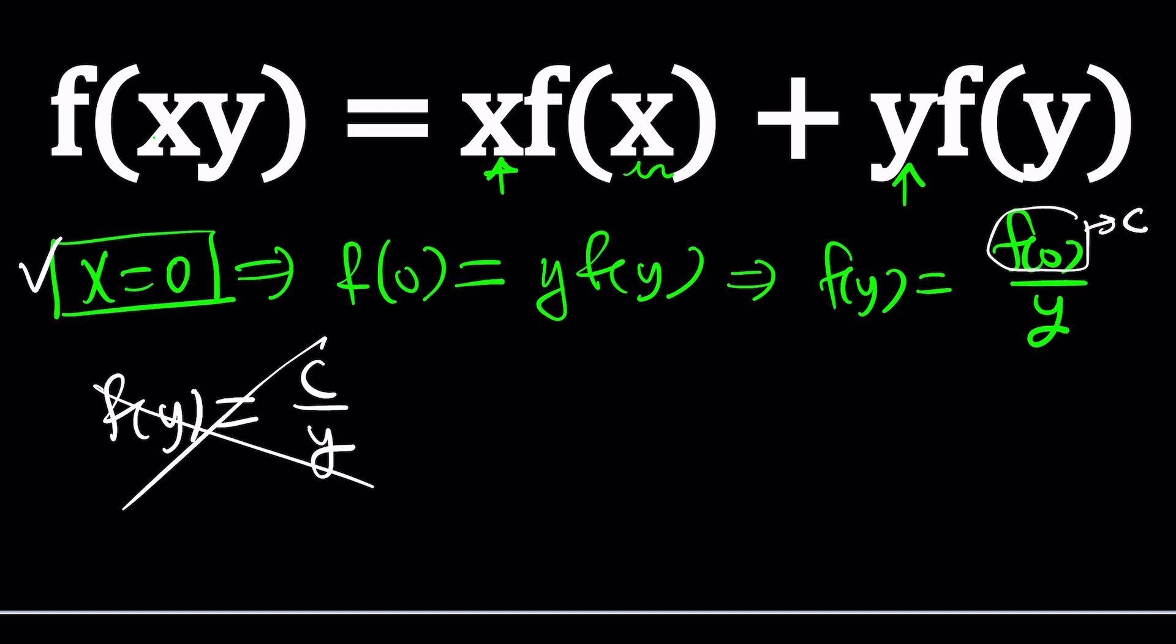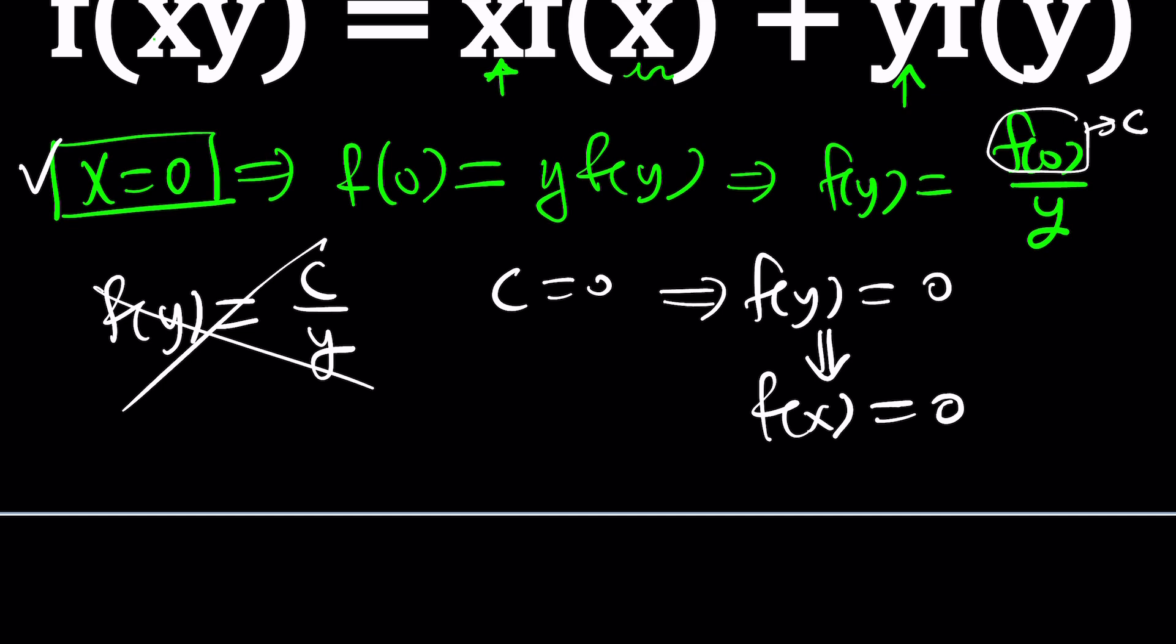Otherwise, you're going to run into a contradiction. So if c is zero, then f of y will be zero. Wait a minute. What is that supposed to mean? You just said x is zero. Now f of y is zero. Yes, as a consequence. But this also means that f of x is zero because y is an arbitrary variable. It's a dummy variable. You can replace it with x, right?